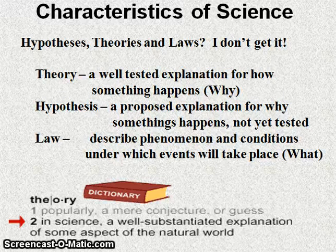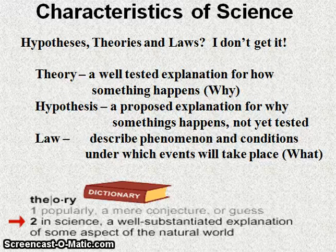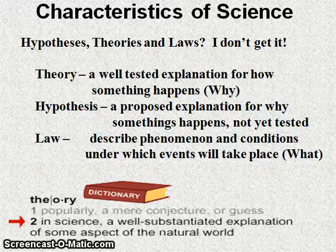Referencing back to the goals of science: theory accomplishes goal number one — explanatory power — and laws accomplish goal number two — predictive power. It's very important to note that theories do not become laws. Saying that would be analogous to saying a kitten could grow up to become a dog. Theories and laws are very different things that accomplish two different goals of science. In class, we'll look at this more closely by comparing Newton's laws of gravity with Einstein's theory of general relativity, which explained how gravity works.